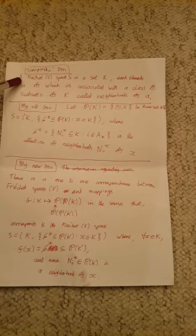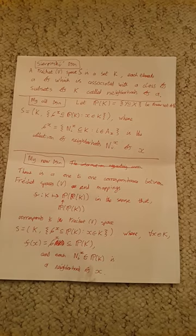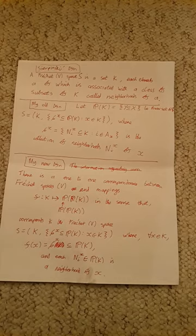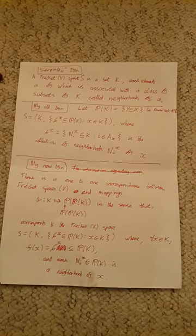Sierpinski's definition: A Fréchet V-space is a set K, each element of which is associated with a class of subsets of K called neighborhoods of A. That's fairly simple.